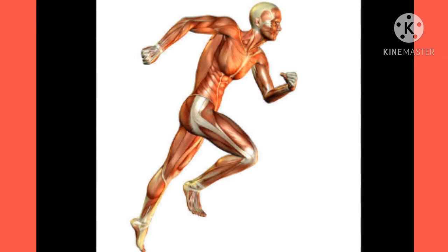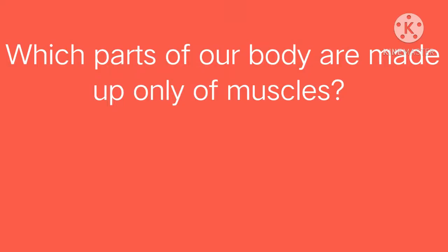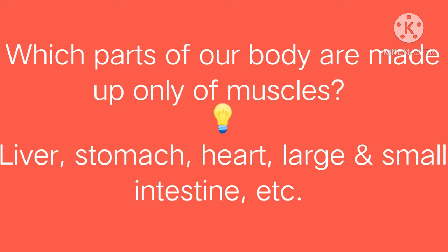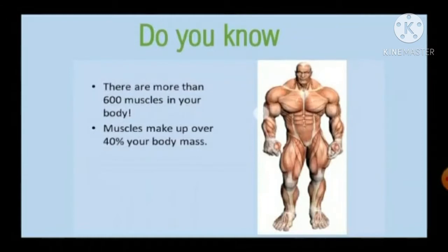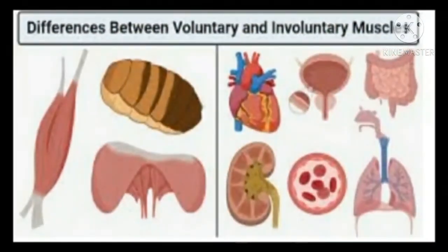Brain power question: which parts of our body are made up only of muscles? The liver, stomach, heart, large and small intestine — these body parts are made up of only muscles. Did you know there are more than 600 muscles in the human body? Muscles contribute almost 40 percent of the weight of an adult human body.